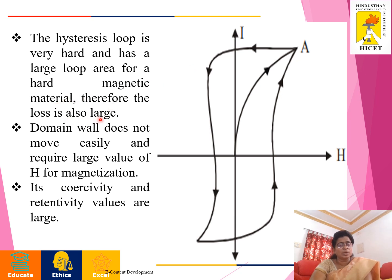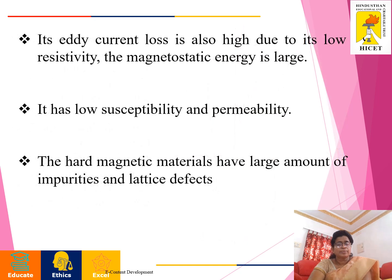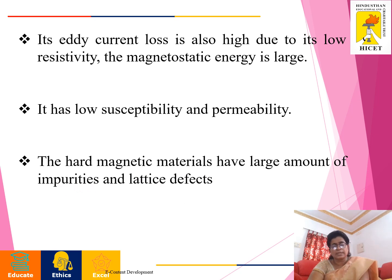Therefore, loss is also large. The domain wall does not move easily and requires a large value of H for magnetization. Its coercivity and retentivity values are large. Its eddy current loss is also high due to its low resistivity. The magnetostatic energy is large. It has low susceptibility and permeability. The hard magnetic materials have a large amount of impurities and lattice defects.